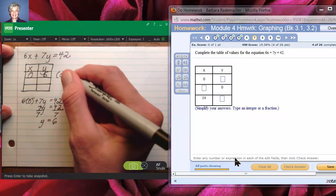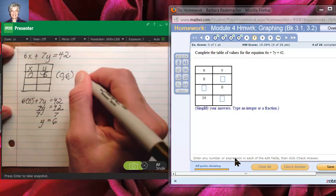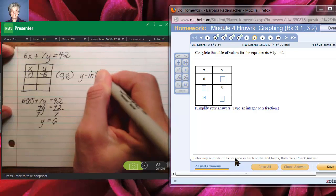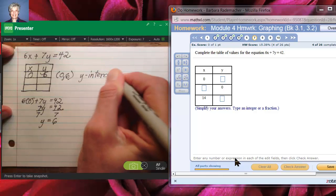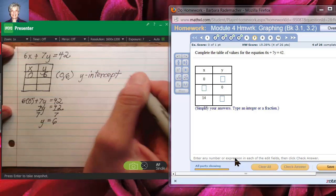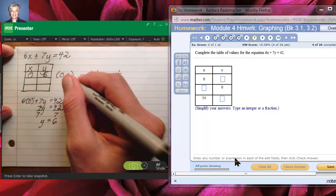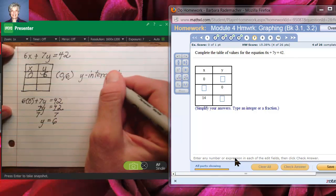This point with a 0 in that position is called the y-intercept, that's the point where the line, the graph of the line, is going to cross the y-axis. You'll see all this in just a little while.